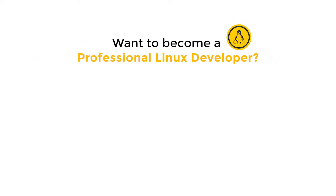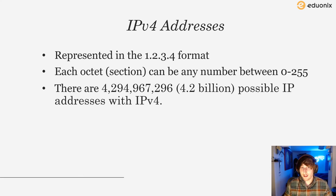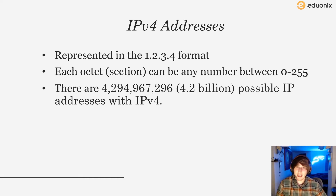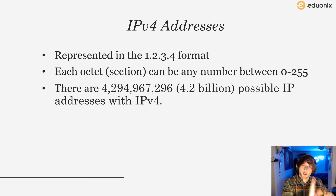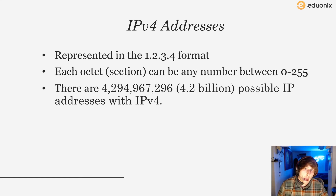Now, to talk about specific IP address types: we have IPv4 addresses, which are the most common you've probably seen. These are represented in the common 1.2.3.4 format. Each octet, or section separated by a period, can represent any number from 0 to 255. So instead of 1.2.3.4, we could have 0.0.0.0 all the way up to 255.255.255.255, and anything in between those two ranges.